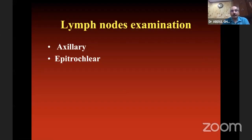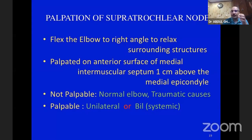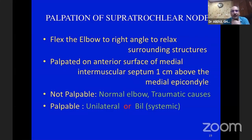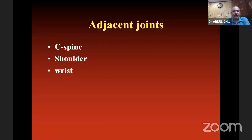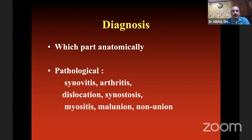Do not forget to examine the lymph nodes — the epitrochlear lymph node. To palpate the epitrochlear lymph node: flex the elbow at 90 degrees so that surrounding structures are relaxed, palpate on the anterior surface on the medial side, and feel in the intermuscular septum one centimeter above the medial epicondyle. Nodes are not palpable in normal patients but can be palpable unilaterally or bilaterally. Examine adjacent joints: cervical spine — quick range of motion; shoulder — quick range of motion for any restriction. Then reach your diagnosis.